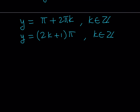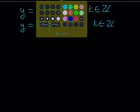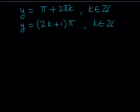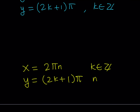So, the conclusion: the x values are written as 2πn, and the y values are written as 2k plus 1 times π, where n and k are integers. This gives us all the solutions to the trigonometric system.